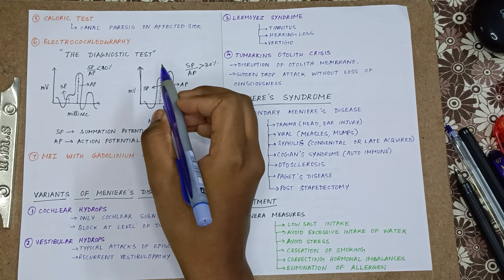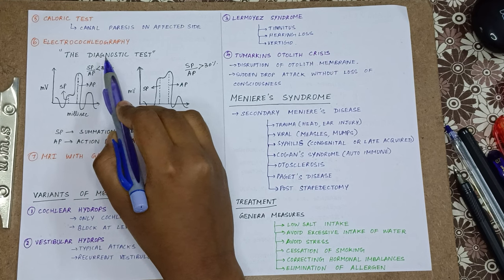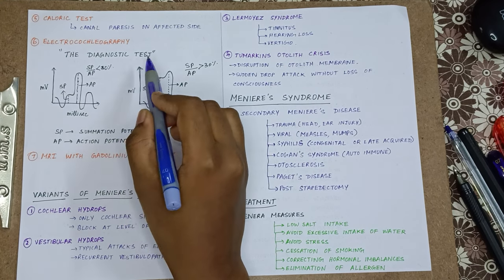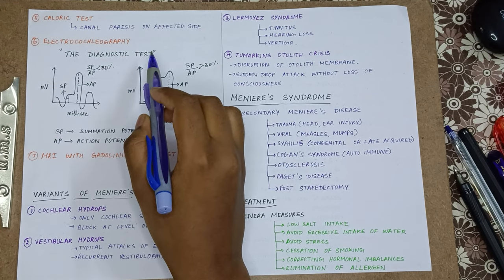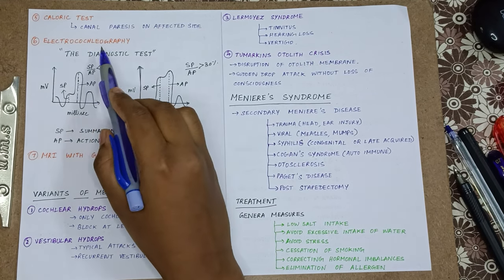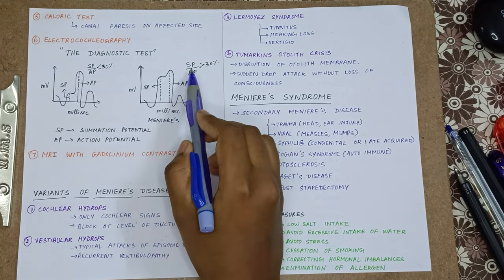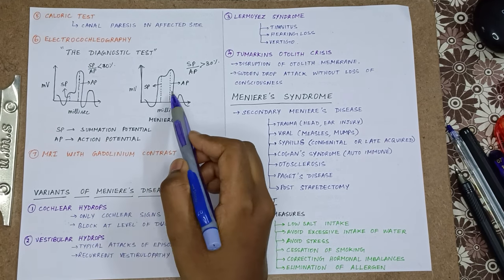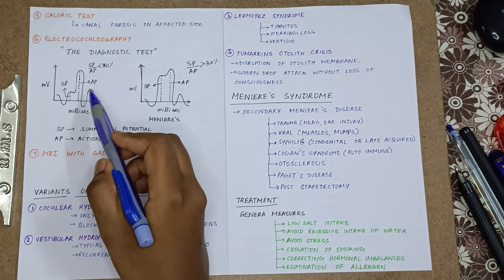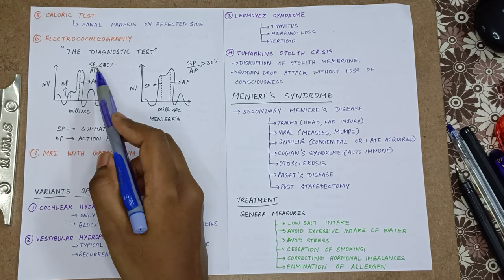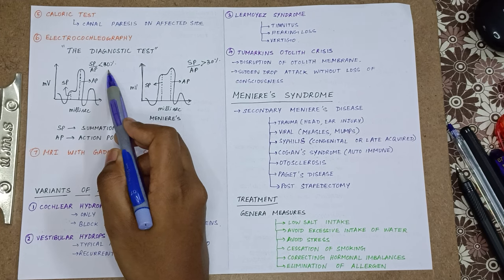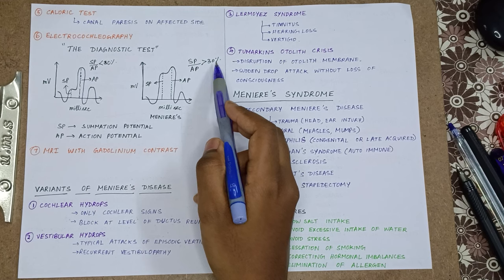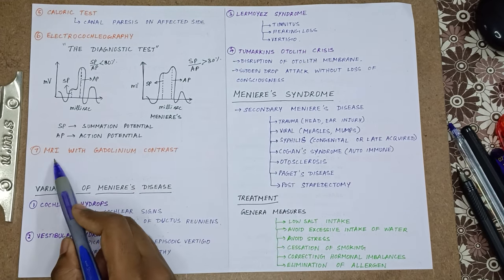The next test is electrocochleography — this is the diagnostic and specific test for Meniere's disease. In electrocochleography, we compare the summating potential (SP) and the action potential (AP). In a normal patient the SP/AP ratio is less than 30%, but in Meniere's disease the SP/AP ratio is greater than 30%.